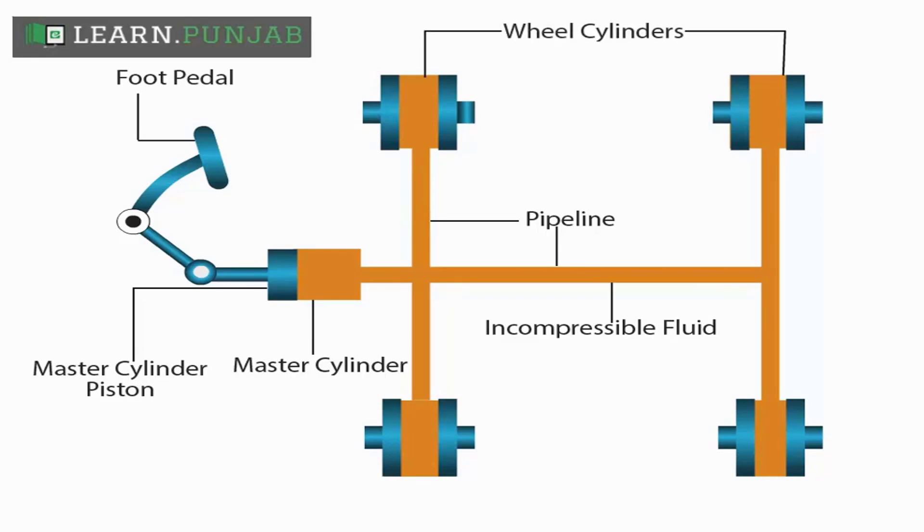The other end of the pipeline is attached with the cylinder of the car wheel, which has two cylinders P1 and P2 which are attached with brake shoes. The area of cross section of the wheel cylinder is greater than the area of cross section of the master cylinder.